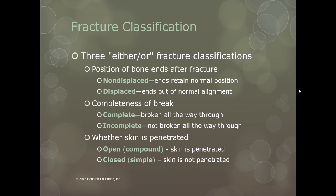If the ends are still in their normal alignment, that is a non-displaced fracture. If the ends are out of normal alignment and no longer meet, then that is a displaced fracture. If the bone is broken all the way through, you have a complete fracture. If the bone is not broken all the way through, you have an incomplete fracture. If the skin is penetrated, you have an open or compound fracture. If the skin has not been penetrated, then you have a closed or simple fracture.